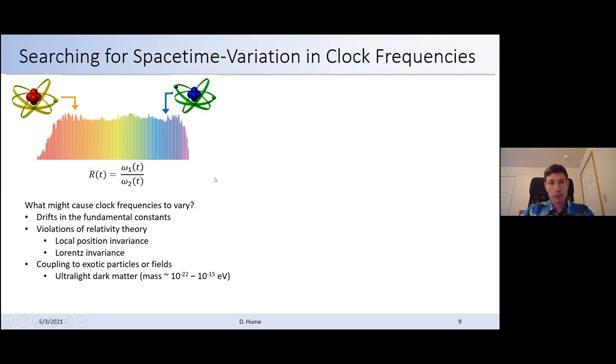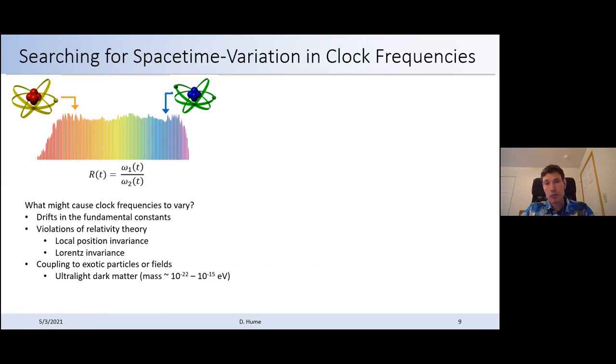So I want to start to mention some of the tests of fundamental physics that have already been done using these clocks. The basic tool that we have is we can look for space time variation in the clock frequencies. So we're comparing the resonance frequency in one atom to the resonance frequency in another atom using this femtosecond comb. We're measuring a ratio which is not limited in its accuracy to the accuracy of the primary standards. And you can ask the question, well, what might cause these clock frequencies to vary? One thing is if the fundamental constants are not truly constant, then you can see a drift in these ratios. In particular, the fine structure constant sets the scale for the energy level differences in atoms. And you can search for drift in the fine structure constant using atomic clock measurements.